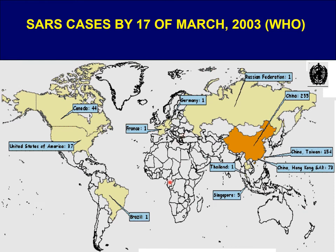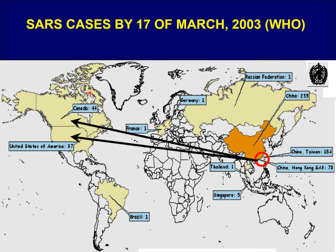This is an example of the situation we were in on the 17th of March 2003. This is the map of the world, and this pneumonia — this SARS outbreak — took place here, which is basically the same region in which COVID-19 jumped to the human population 20 years later. We had quite a large number of infected people in China, 255 by March 2003, and it was spreading quite rapidly — for example, to the United States with 37 cases, and to Canada with 44 cases.